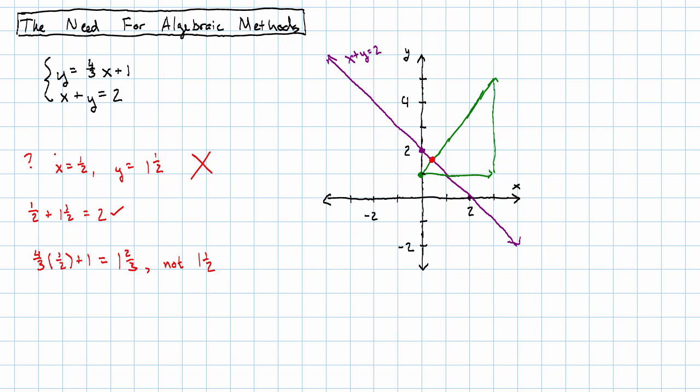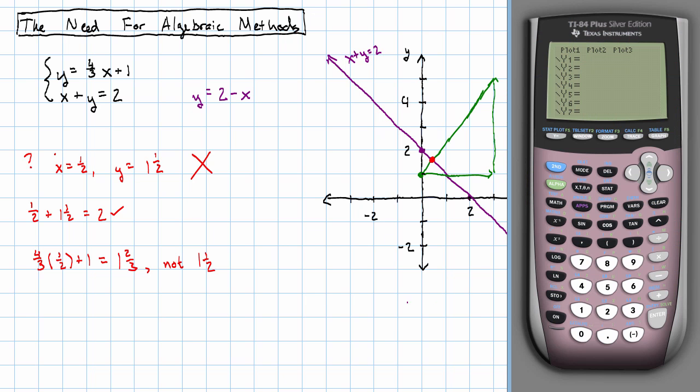We could do this on the calculator. Solve the second equation for y. Y equals two minus x by subtracting x from both sides. So, I'll enter four-thirds x plus one and I'll enter two minus x.